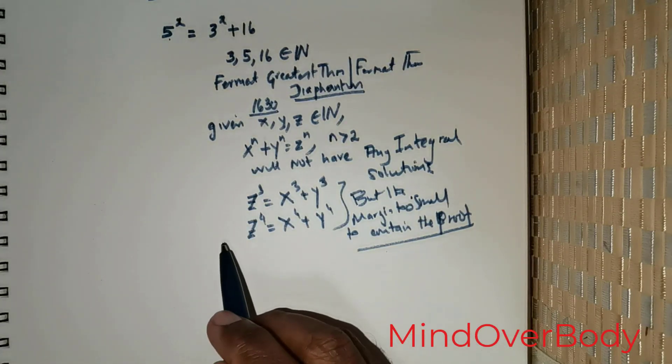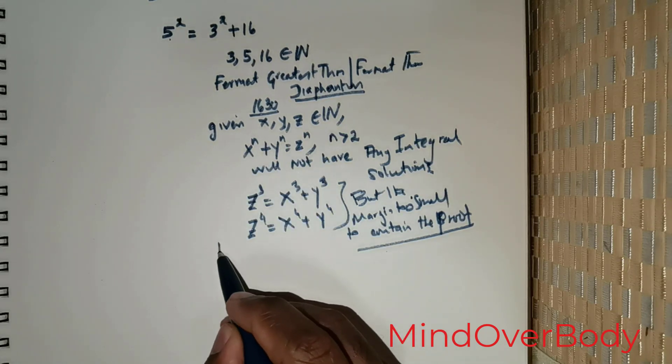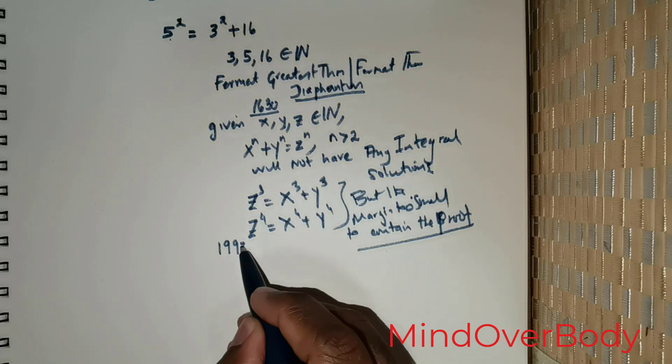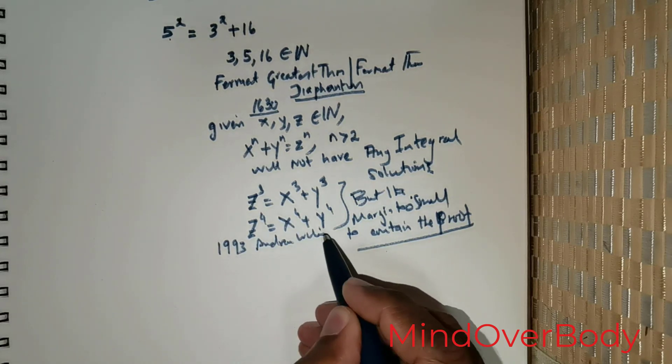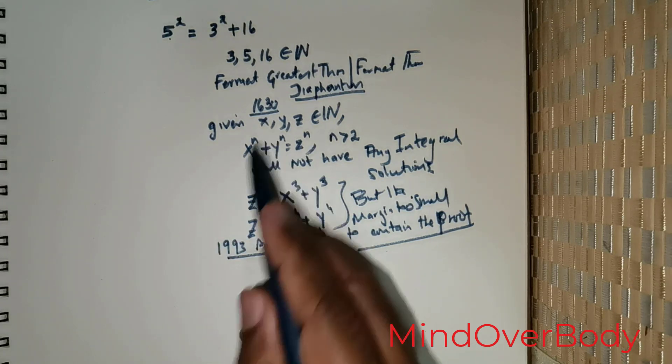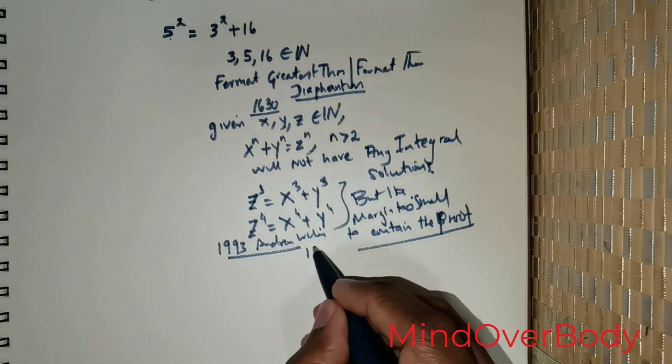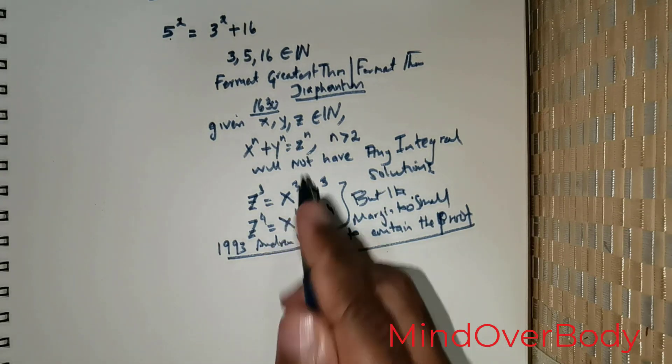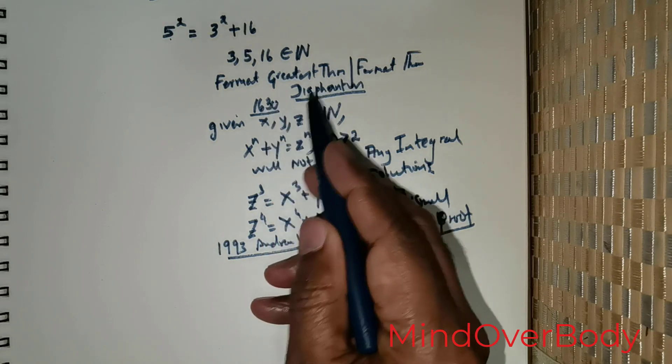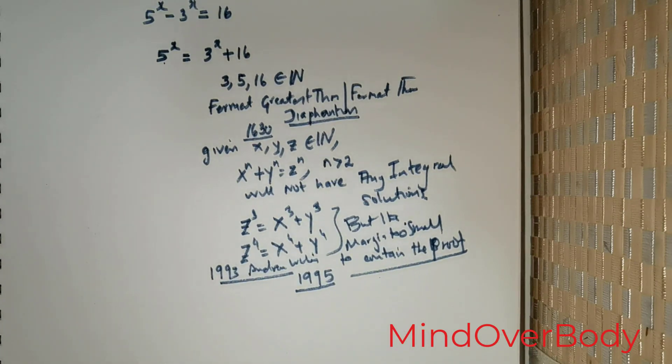For centuries, mathematicians tried to establish a proof, but up until 1993 when Andrew Wiles gave the proof for Fermat's Last Theorem. But that proof had an error, which was later solved in 1995. So, according to Fermat's Greatest Theorem, if we were to consider this...